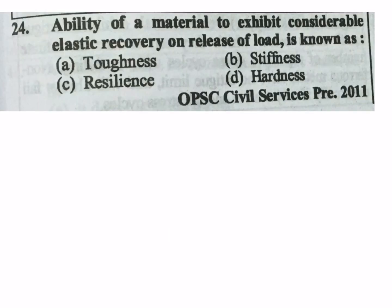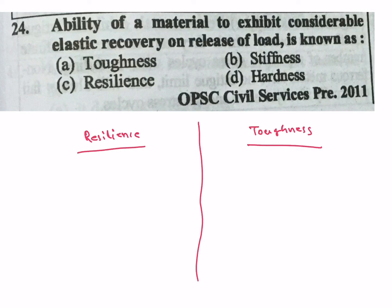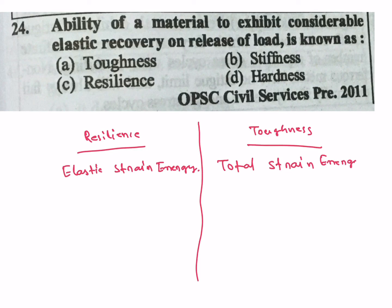Next question: The ability of a material to exhibit considerable elastic recovery on release of load is known as — resilience, resistance, or toughness. Resilience is elastic strain energy and toughness is total strain energy up to fracture point. Since the question asks about elastic recovery, the answer is resilience — C is the correct answer.